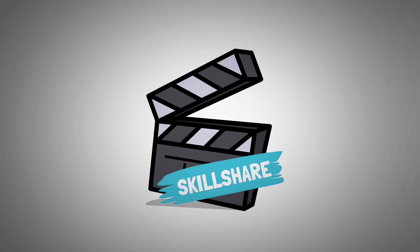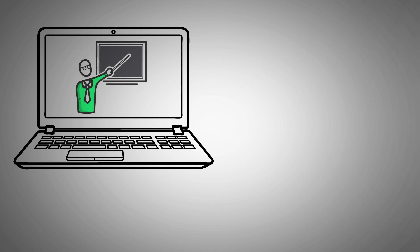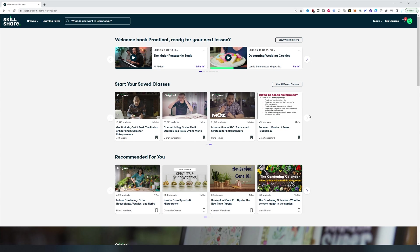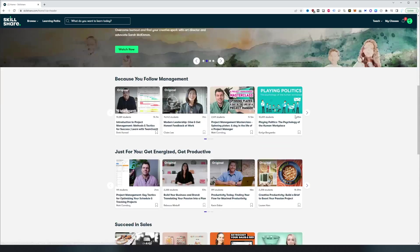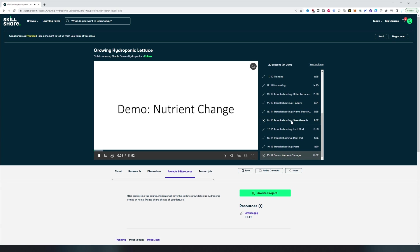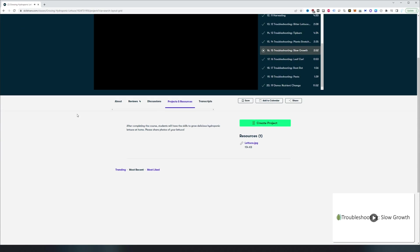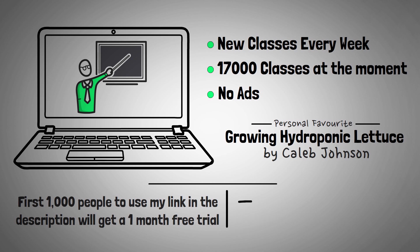Now, this video is sponsored by Skillshare, but I've actually had a Skillshare account for almost five years now, and I'm always impressed at the quality of education I find on there. Every week, there's new classes being added, but one that I highly recommend watching is Growing Hydroponic Lettuce by Caleb Johnson. This class is actually the one that helped me a ton in learning about the pH of my nutrient solution, and learning how to germinate my own seeds. If you don't know about Skillshare by now, they're an online learning platform with over 17,000 classes at the moment, and there are no ads. If you're interested, the first 1,000 people to use my link in the description below will actually get a one-month free trial of Skillshare. You can use the link, or you can use my code, practicalpsychology, at checkout.